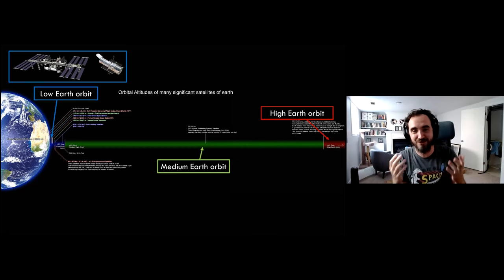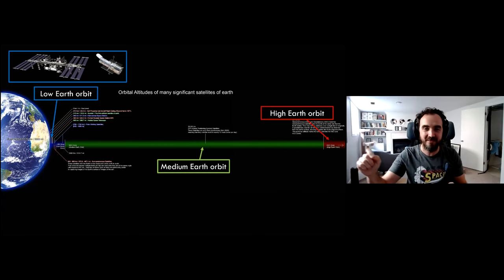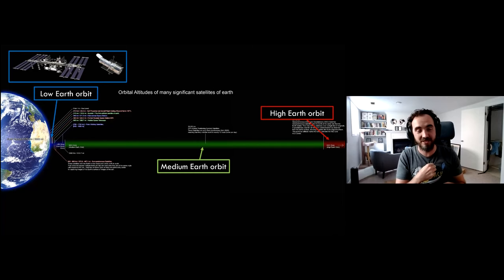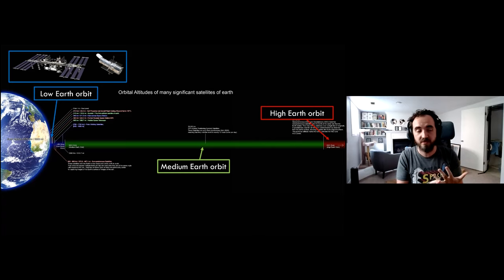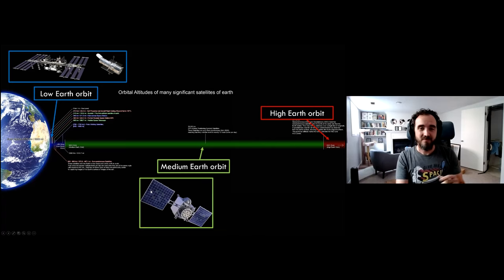The ISS is actually really close — if you're in Toronto, Montreal is farther away than the International Space Station when it flies overhead. So low Earth orbit is where we put satellites that take pictures of the Earth, communicate with the Earth, and more recently the internet constellations like Starlink. There are a lot of satellites in LEO.